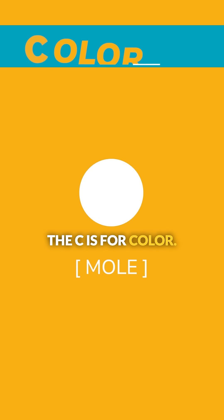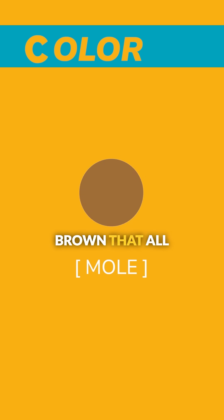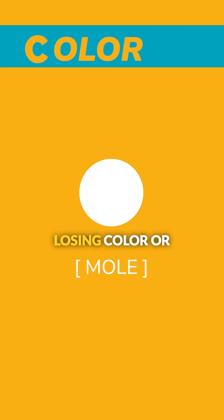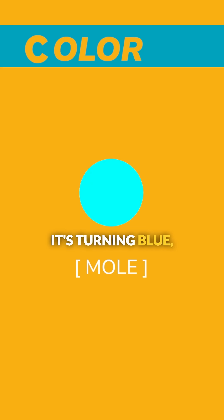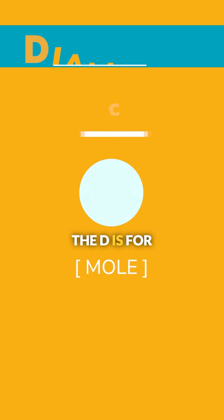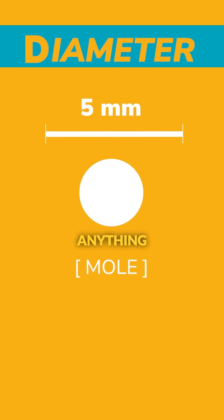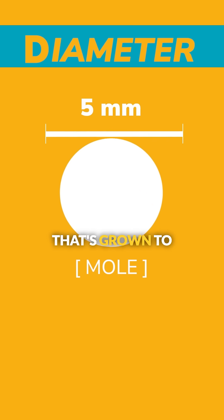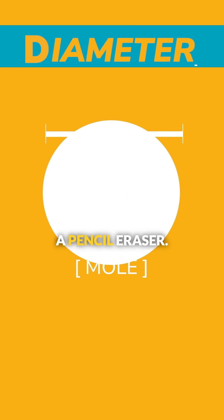The C is for color — a mole that's brown that all of a sudden is changing color, and it's white or losing color, or it's turning blue, that's something of concern. The D is for diameter: anything bigger than a pencil eraser, or something that's grown to be bigger than a pencil eraser.